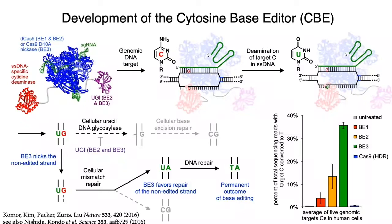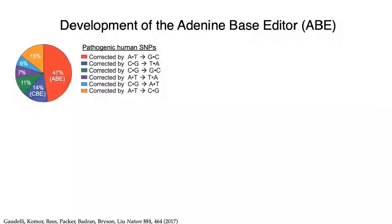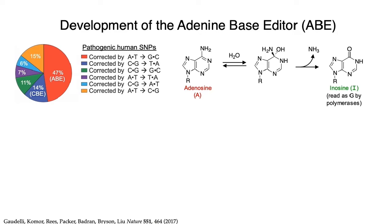By converting targeted CG base pairs to TA, cytosine base editors can correct up to 14% of known pathogenic mutations, shown here in blue. Correcting the lion's share of disease-associated point mutations, however, requires conversion of an AT base pair to a GC base pair, the opposite of what a cytosine base editor does. In 2017, we reported the development of an adenine base editor, which accomplishes this conversion. ABEs catalyze the hydrolytic deamination of adenosine, yielding inosine, which is read as G during transcription or DNA replication.